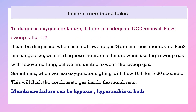Another form of oxygenator failure is inadequate CO2 removal. It is diagnosed when using high sweep gas, pre- and post-membrane CO2 is unchanged, or when the lung has recovered but weaning off sweep gas is not possible. Using a sigh breath with flow of 10 liters for 5–30 seconds can flush condensate gas inside the membrane. Membrane failure can present as hypoxia, hypercarbia, or both.